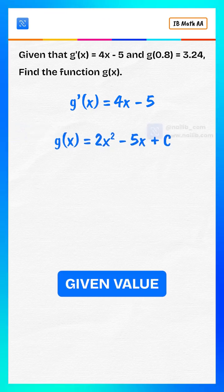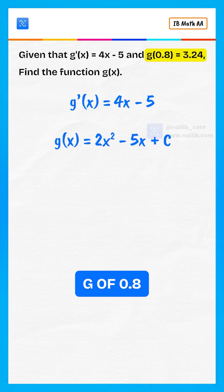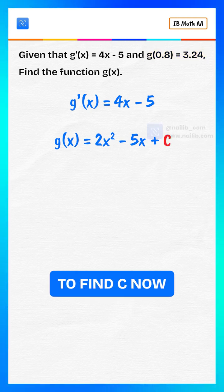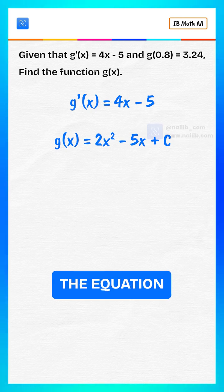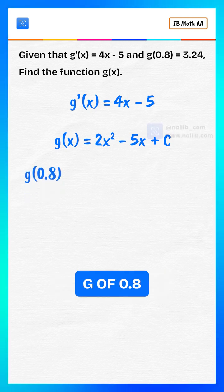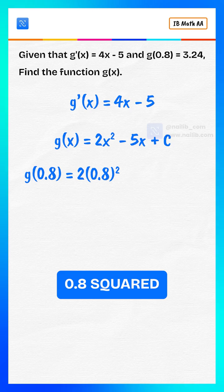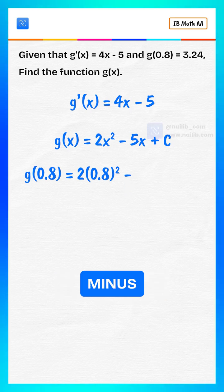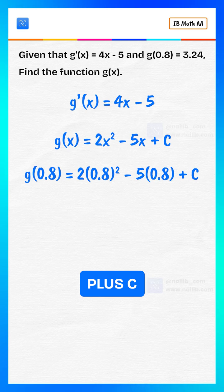Use the given value g of 0.8 equals 3.24 to find c. Now substitute into the equation: g of 0.8 equals 2 times 0.8 squared minus 5 times 0.8 plus c.